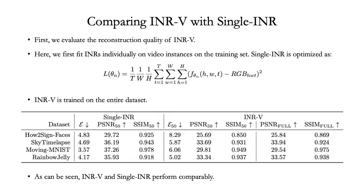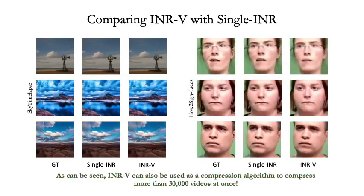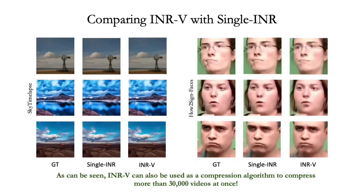Now we move to evaluation and comparisons. We first compare INRV with single INR, where each implicit function F_N is optimized individually for each video V_N. The table shows the results of reconstruction error given by standard metrics on single INR and INRV. As can be seen, INRV performs comparably with single INR, indicating that INRV has learned accurate video representations despite learning thousands of video instances at once, whereas single INR is trained individually for each video. Here we show some qualitative results — the difference between INRV and single INR is hard to notice. Thus, INRV can also be used as a compression technique, storing thousands of videos and reconstructing them with minimal perceptual loss.